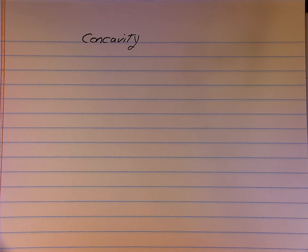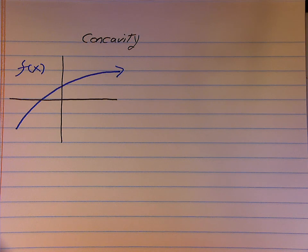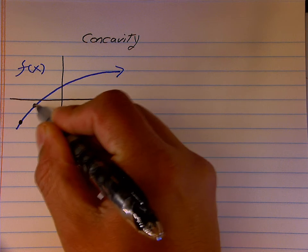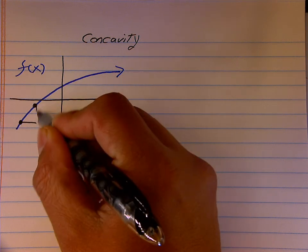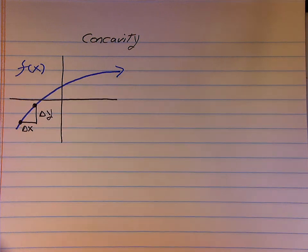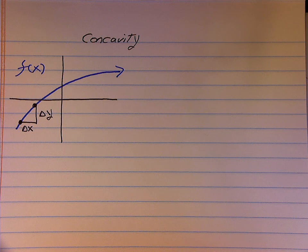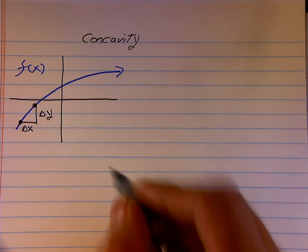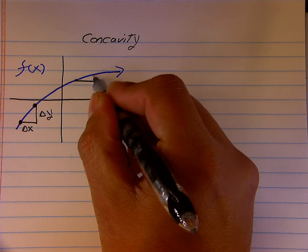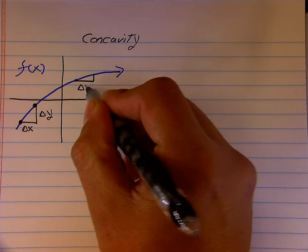Don't confuse rate of change with slope. Take a look at this function. You can tell that as we move from left to right on the function, the function is increasing. So when we look at any two points, we can look at a rate of change between those two points. But this is a nonlinear function. As we move further and further from the left to the right, that ratio is changing.